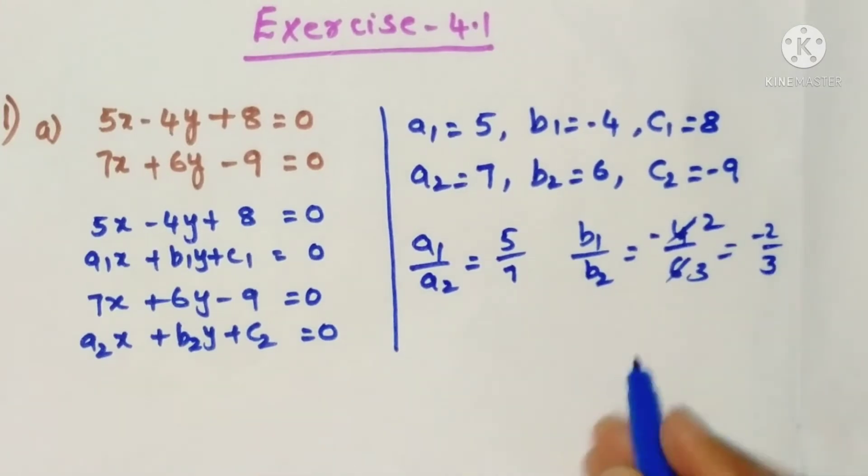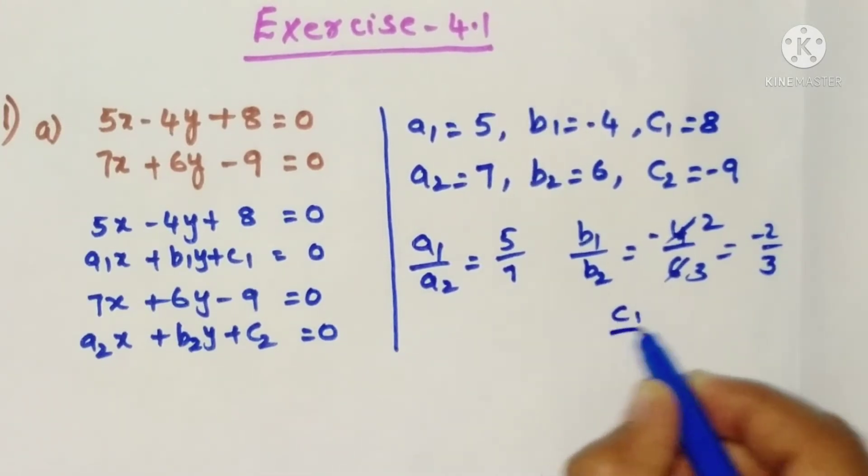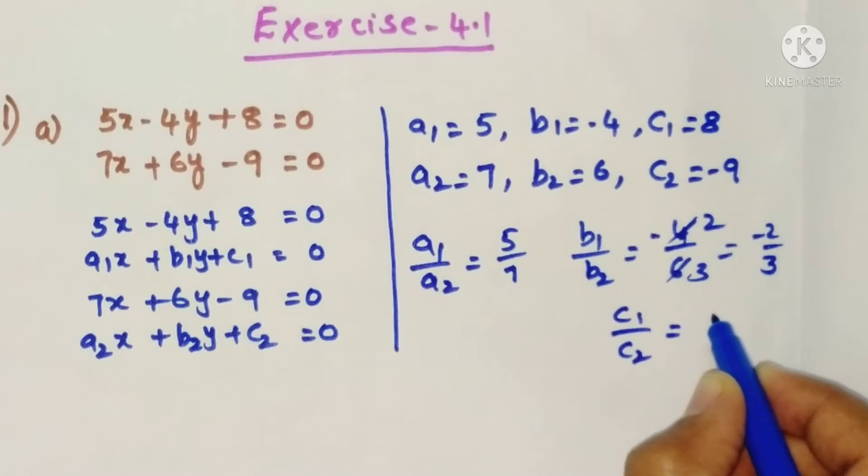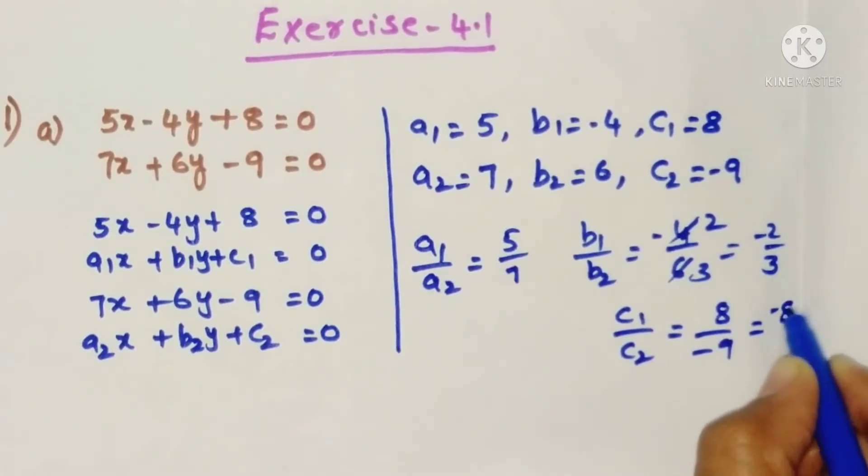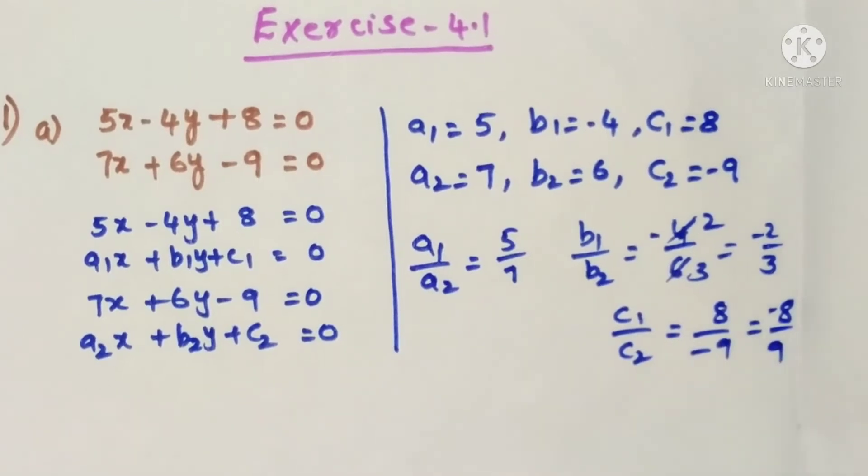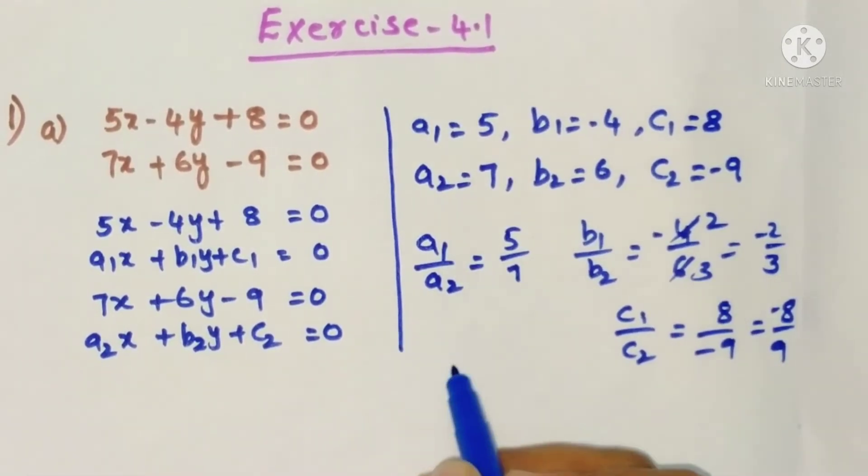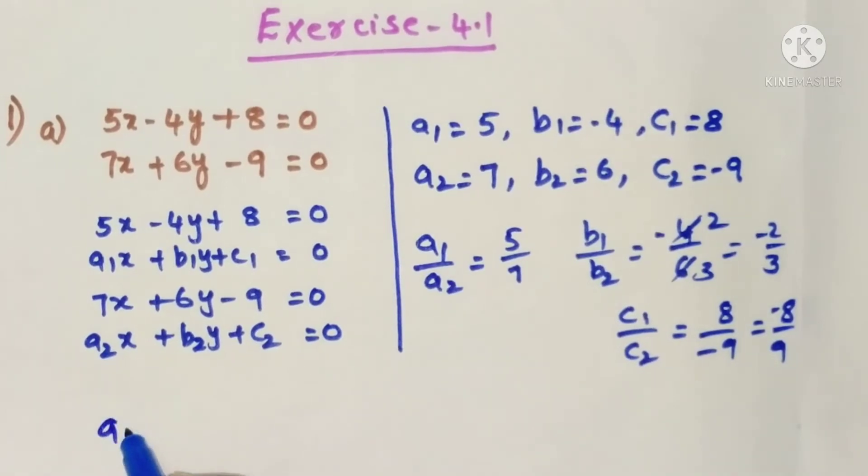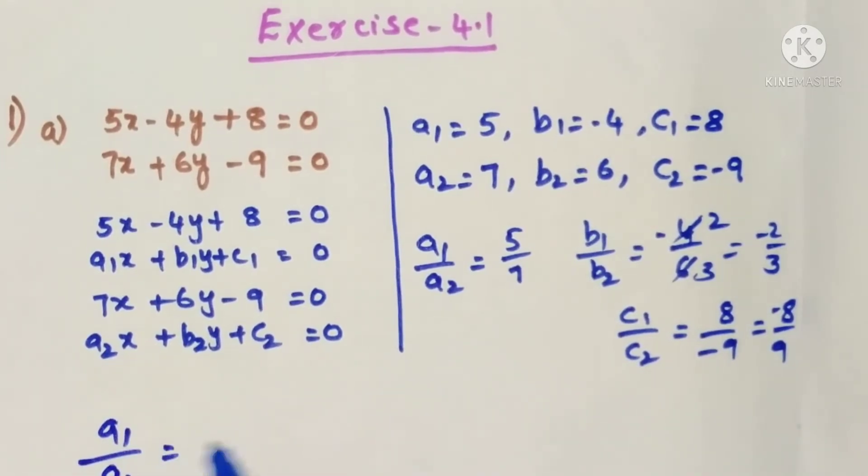If we cancel two 2's and two 3's it is minus 2 by 3. Now c1 by c2 is 8 by minus 9, that is minus 8 by 9. So we got, now from the observation we can write a1 by a2 is not equal to b1 by b2.